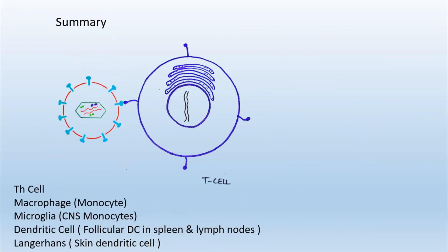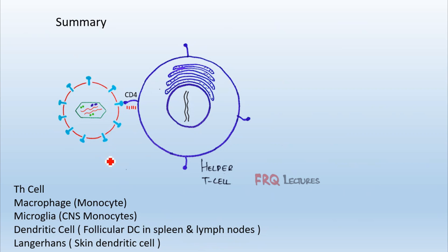Many other cells also possess the unique CD4 molecule. So far we discussed macrophages, which are monocytic cells, but HIV can also attack T cells — more specifically helper T cells, which also possess the CD4 receptor. The gp120 of HIV interacts with the CD4 of the T cell, but this is not enough. It also interacts with a co-receptor on T cells known as CXCR4, which is different from the CCR5 co-receptor used for macrophages.